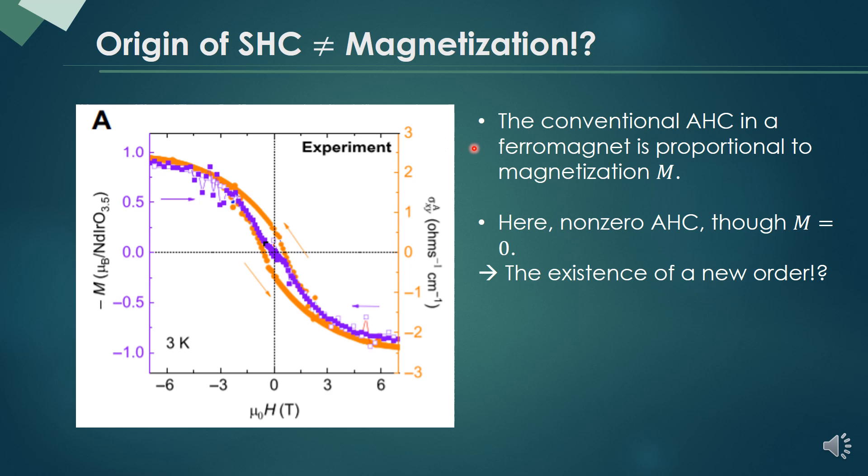The conventional wisdom says that the spontaneous Hall conductivity is proportional to the magnetization, so we also measure the magnetization in the system. However, at zero field, the magnetization is zero, though still the spontaneous Hall conductivity is finite.